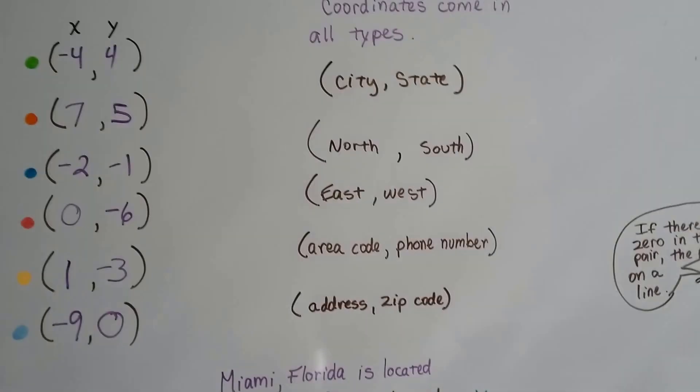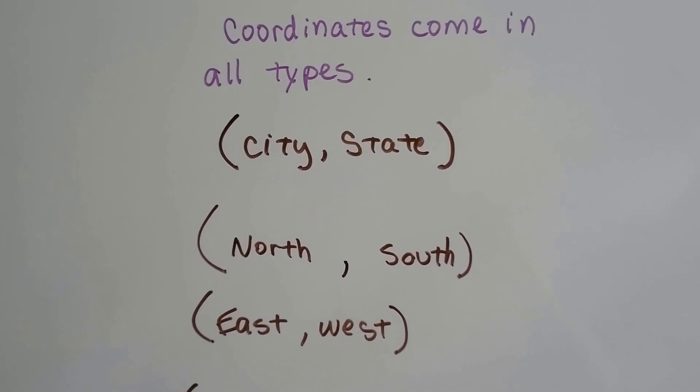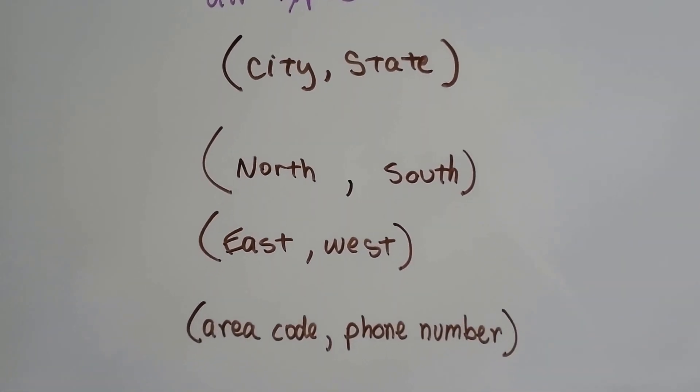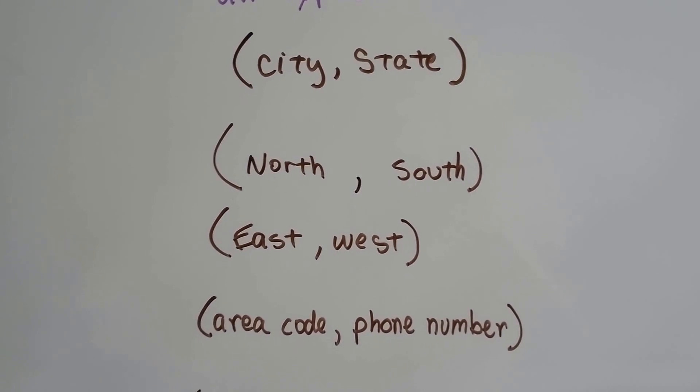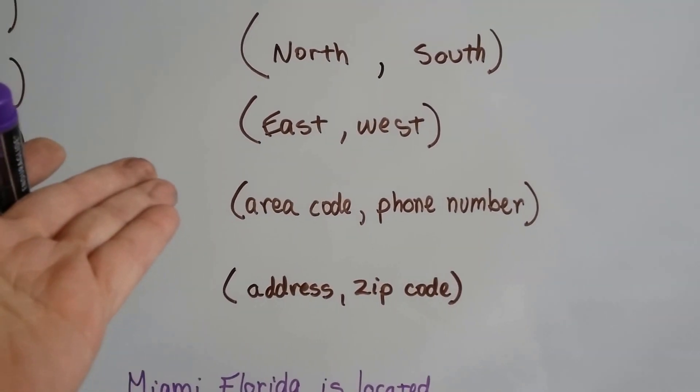And coordinates come in all types. It could be a city and a state. That could be a coordinate. It could be north and south. It could be east and west. It could be an area code and a phone number. Those could be coordinates. And that tells the phone company where you're at, right?